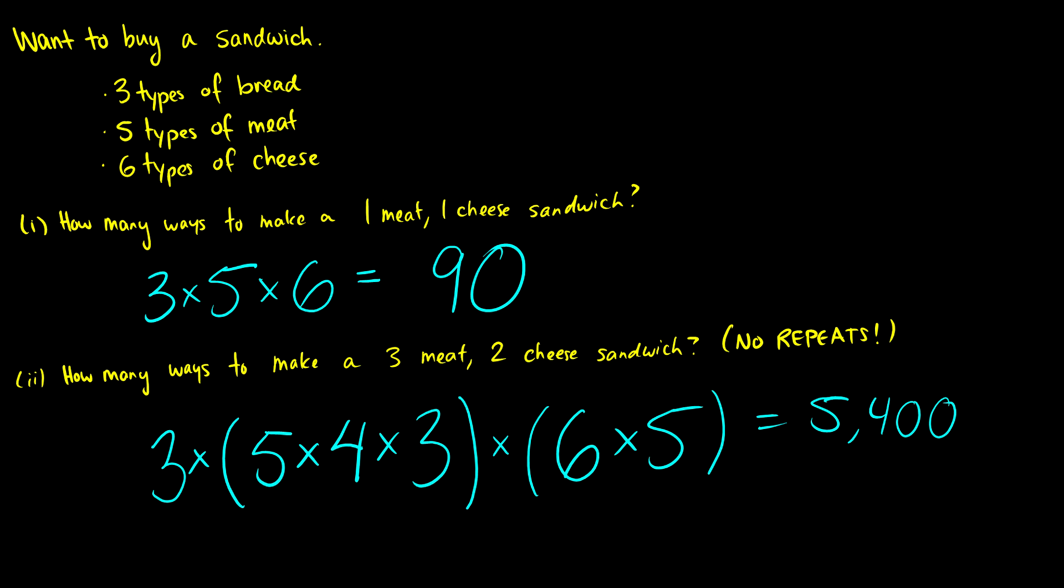So if you want three meats and two cheeses instead of one meat and one cheese, you have a lot more options, which is good because options are good. Anyways, those were some example questions for the rule of product and rule of sum. If you have any questions, please leave them in the comments below and I'll answer them as quickly as I can.